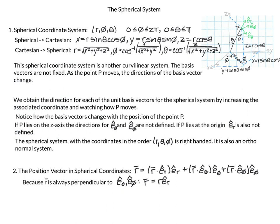First is the definition of spherical coordinates. It's a triplet that specifies a point in three-dimensional space: r, a radius; angle phi, which is the angle from the z-axis; and angle theta, which is the angle from the x-axis. Phi can go from zero to pi, and theta can go from zero to two pi.